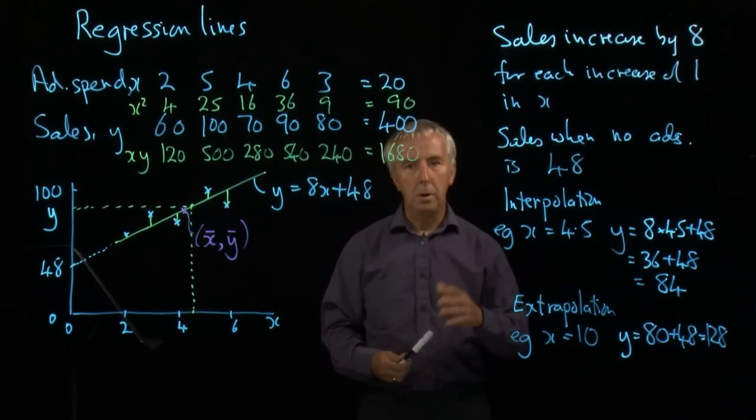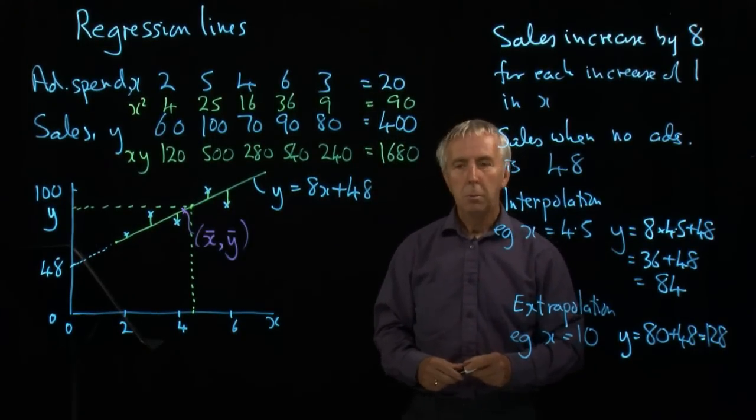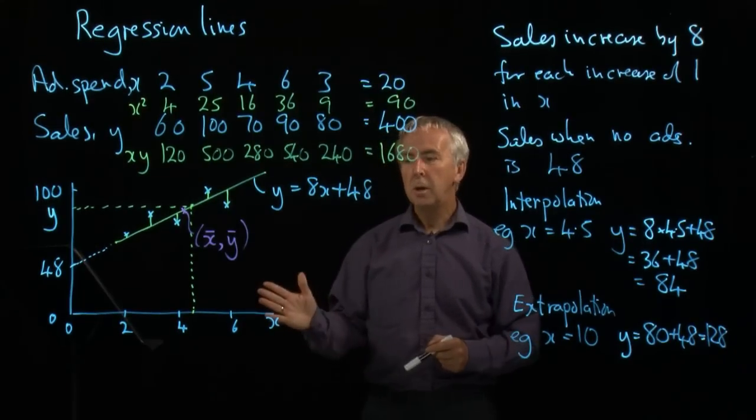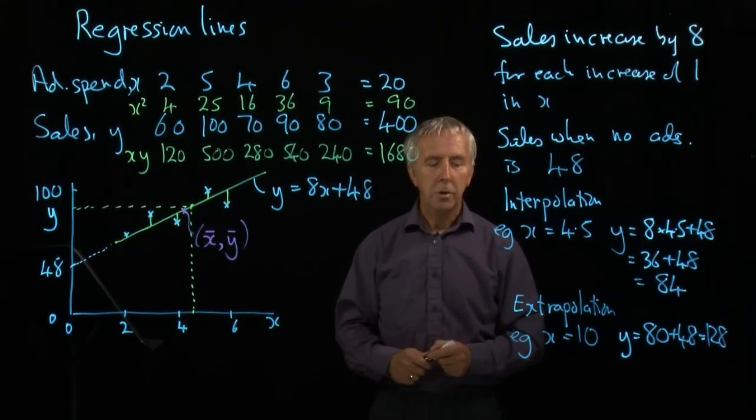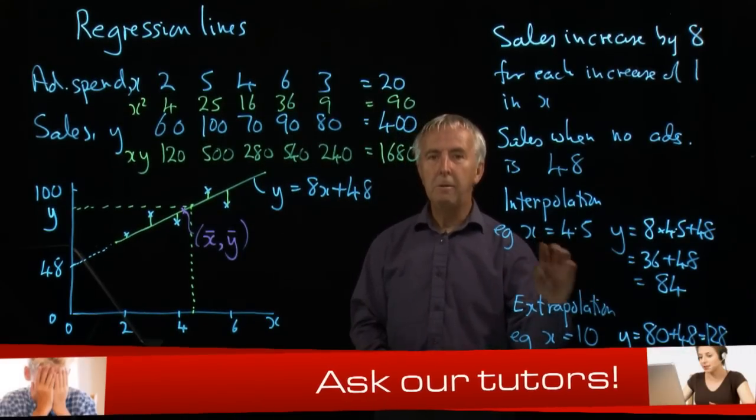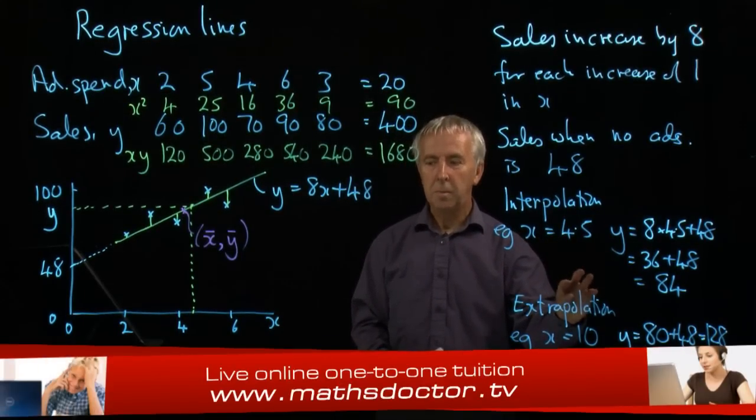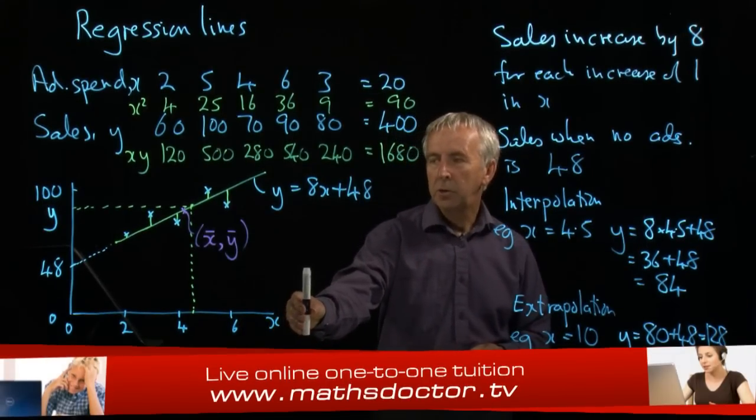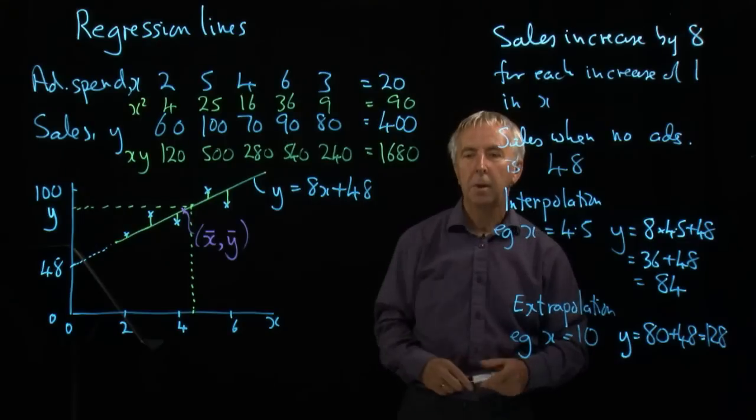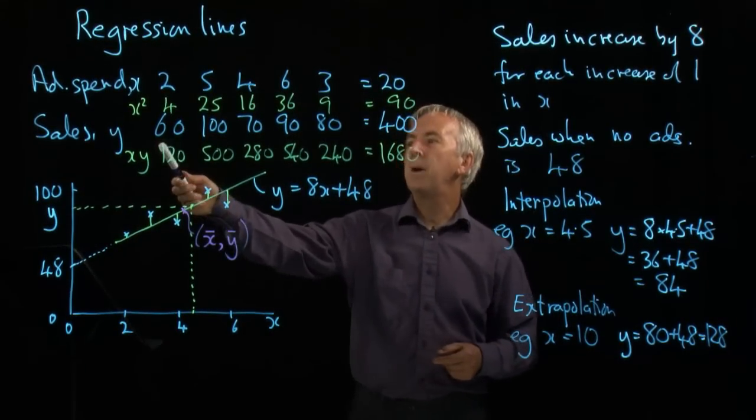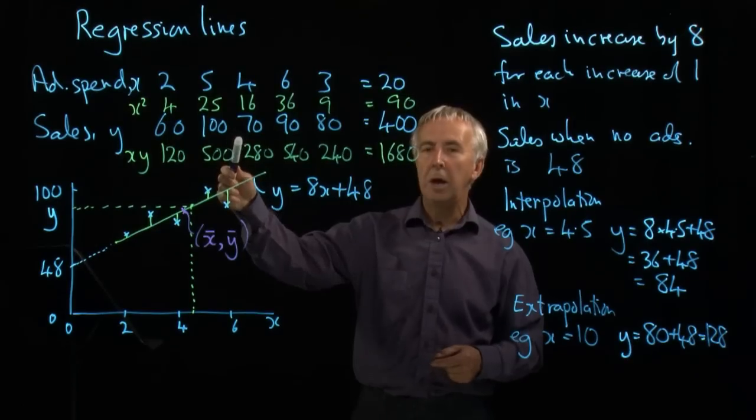and I'd get 8 times 10 plus 48, which is 128. So my model, my mathematical model predicts that the sales now will be £128,000 if I increase advertising to £10,000. But that is a very dangerous assumption, because we have no idea what happens as sales go higher and higher.